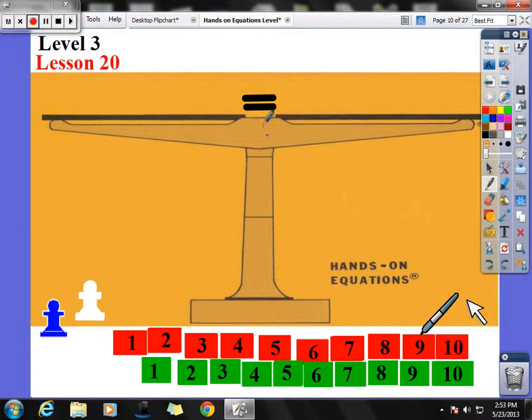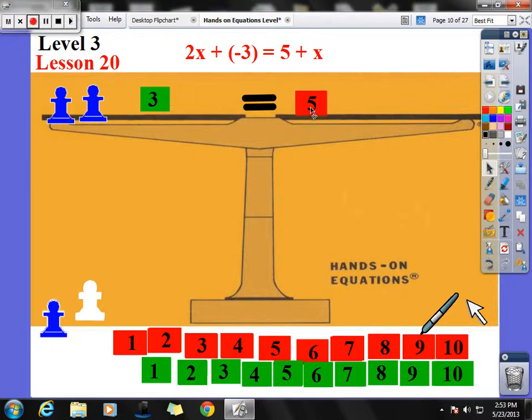And on lesson 20 now, we see a little bit more complicated. Just a couple more steps. Let's set this problem up on our board. 2x, 1, 2, plus negative 3. So I can add a negative, because I can always add things onto my sides. And on the other side, I have a positive 5 and an x.